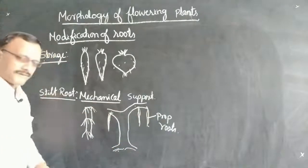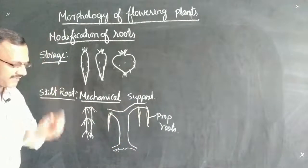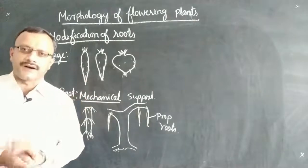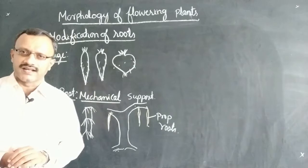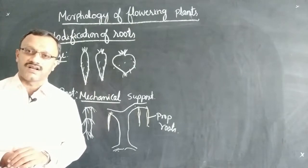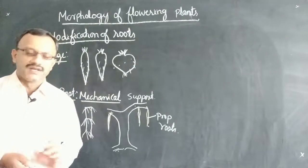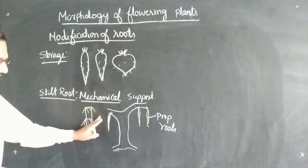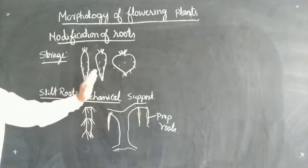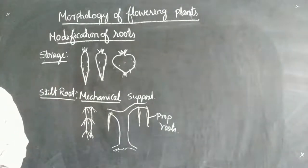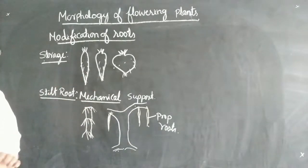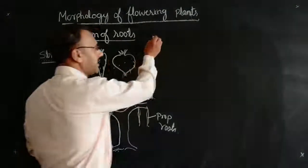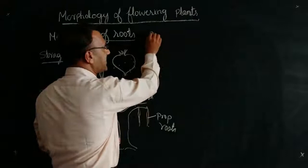Whether it is a stilt root or a prop root, these roots are for mechanical support. Remember, we said earlier that if roots develop from parts of the plant other than the radicle, they are called adventitious roots. This is one example of adventitious roots, where the root develops from the branches or from the nodal region — that is, from the aerial parts of the plant body. There is also one more type of root called breathing roots.